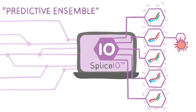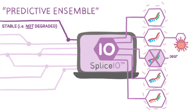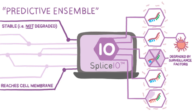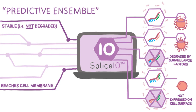For example, Splice.io will identify which neoepitope candidates are stable and are not degraded by surveillance factors that destroy defective mRNA transcripts. In addition, Splice.io identifies whether the neoepitope candidate is translated into a protein that reaches the cellular membrane, so that it can be recognized by therapeutic antibodies or immune cells.